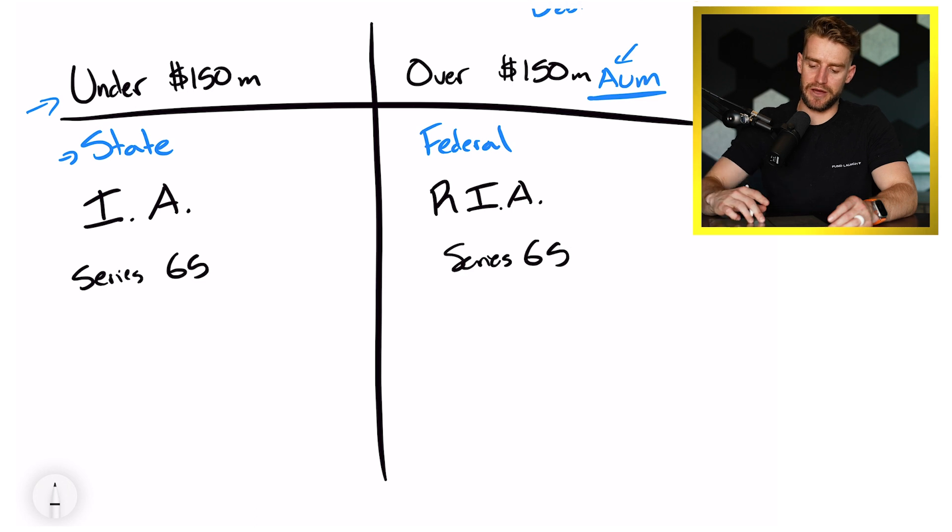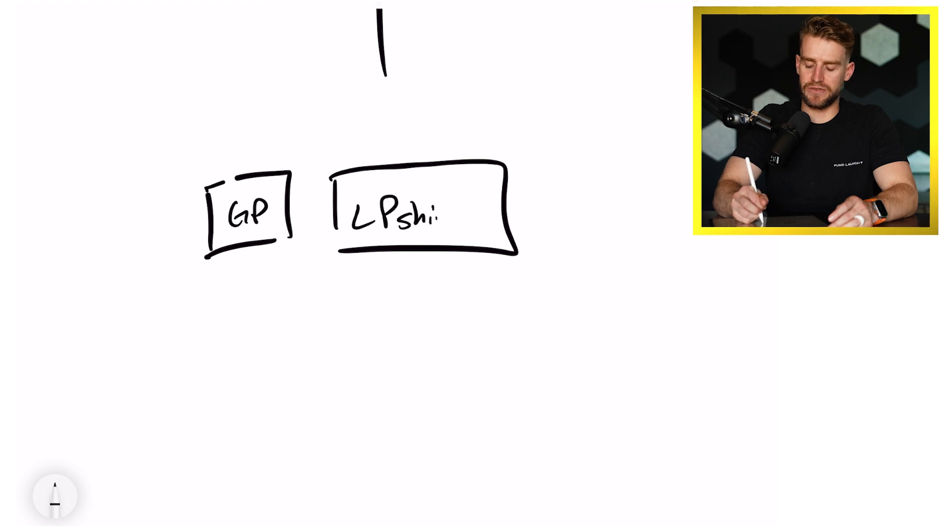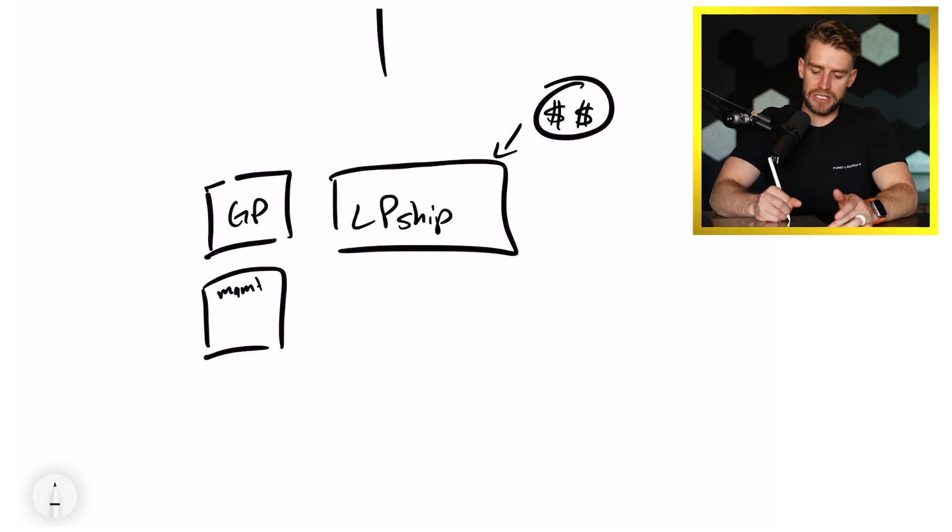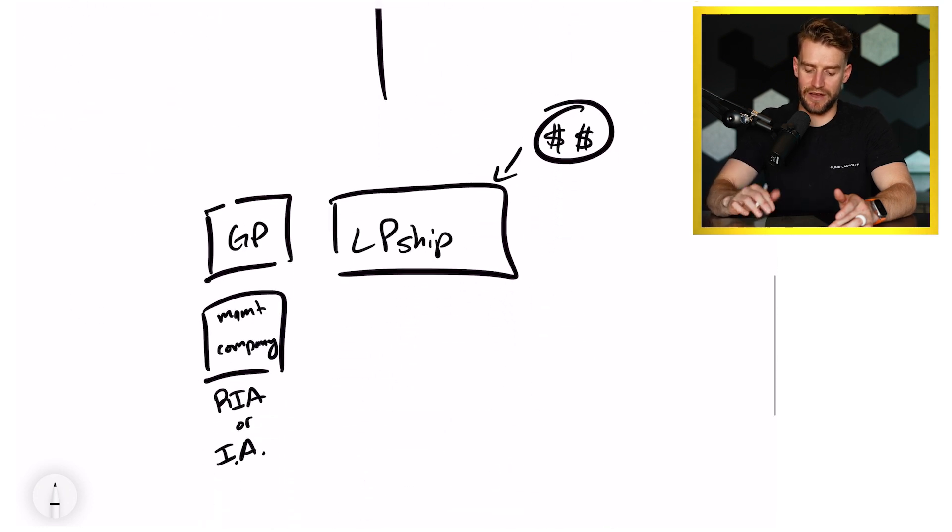And what you do is, let's say this is your fund. You got your general partner, you've got your limited partnership. And if you don't know what these mean, go watch some of our other videos. You've got your limited partners or your investors that put money in. You would set up also what we call a management company. This company would be your RIA or your investment advisor, depending on how much AUM you have. You'd have a series 65 license and you would set up a registered investment advisor.